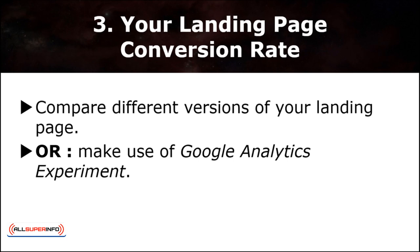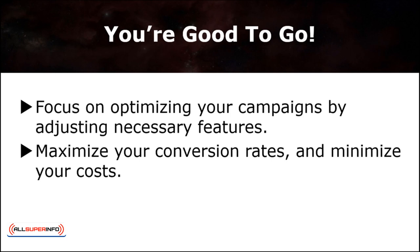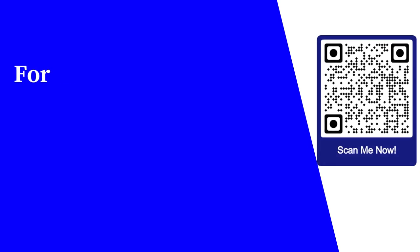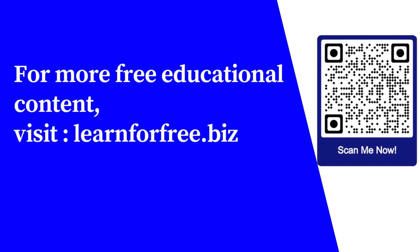Finally, check your landing page conversion rate by comparing different versions of your landing page. There is a shortcut: make use of the Google Analytics experiment tool, which is easy and free. It enables you to test any slight change or variation to your website and measure which landing page generates the most conversions. You can now focus on optimizing your campaigns by adjusting the necessary features to maximize your conversion rates and minimize your costs.